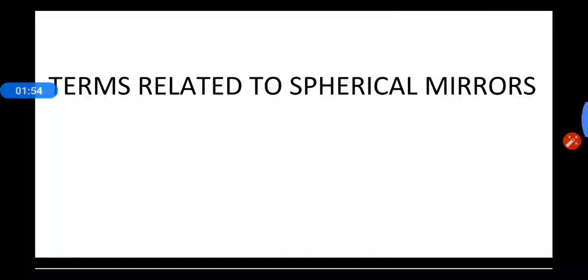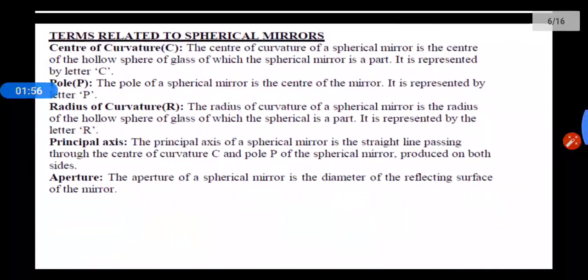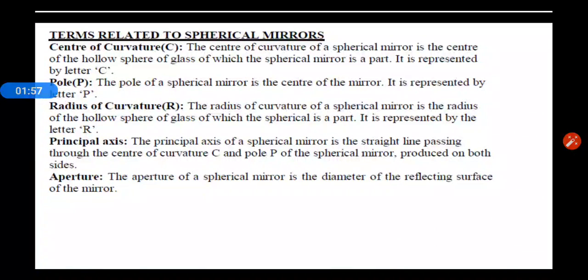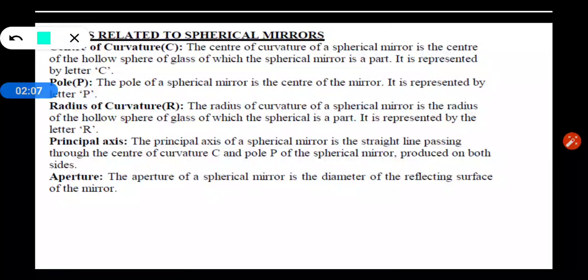Now let us see the terms related to spherical mirrors. The terms related to spherical mirrors are: center of curvature, pole, radius of curvature, principal axis, and aperture. Now let us see these terms one by one.